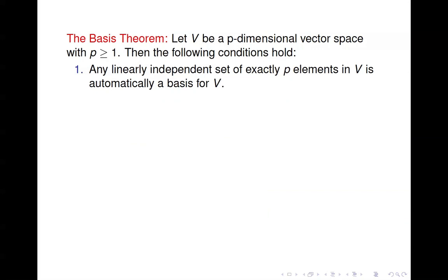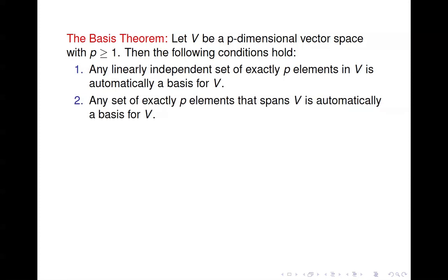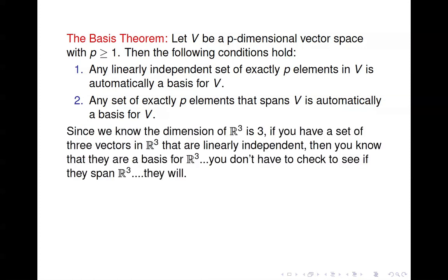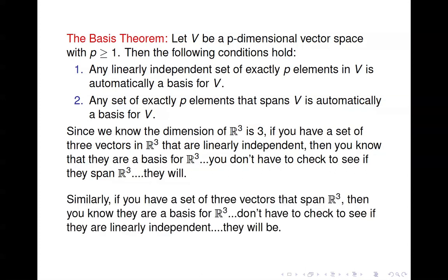The Basis Theorem says that if you have a vector space of dimension p, where p is greater than or equal to one, then: any linearly independent set of p elements in V is automatically a basis for V — you don't have to check if it spans. Similarly, any set of p elements that spans V is automatically a basis — you don't have to check linear independence. Since the dimension of R3 is three, if you have three linearly independent vectors in R3 they're a basis, and if you have three vectors that span R3 they're also a basis.